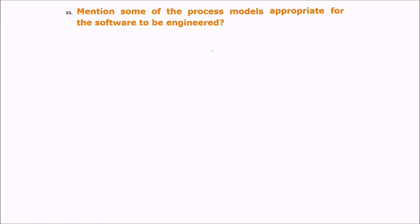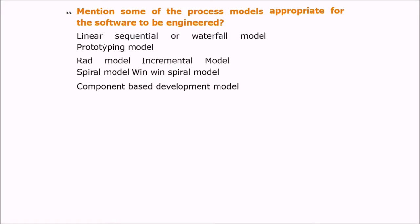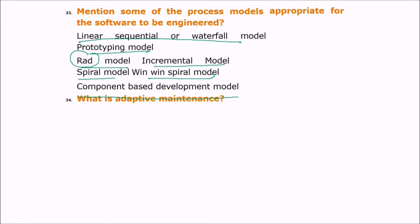Mention some process models appropriate for software engineering. They include: linear sequential or waterfall model, prototyping model, RAD (rapid application development) model, incremental model, spiral model, win-win spiral model, and component-based development model.